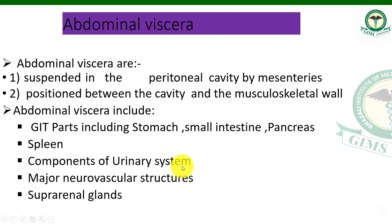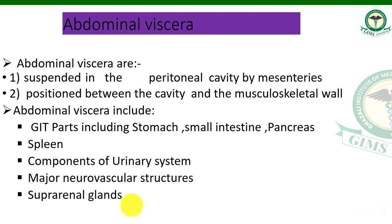Components of the urinary system are also found in the abdominal cavity: the urinary bladder, kidneys, and ureters. There are also major neurovascular structures and the suprarenal (adrenal) glands. Suprarenal means above the adrenal; adrenal means above the kidney. These glands will be studied individually later on as well.